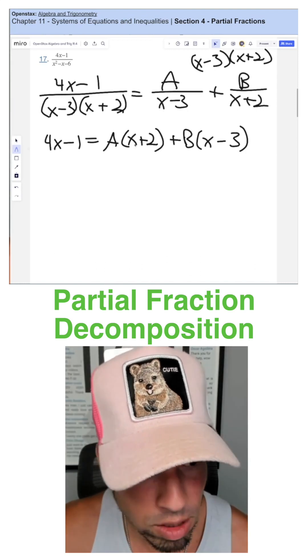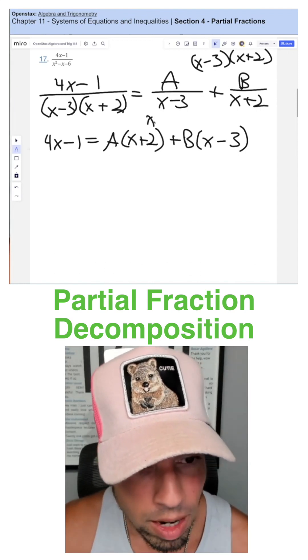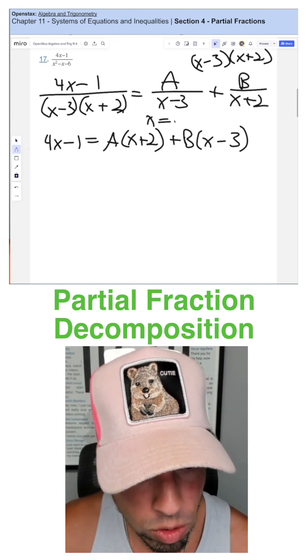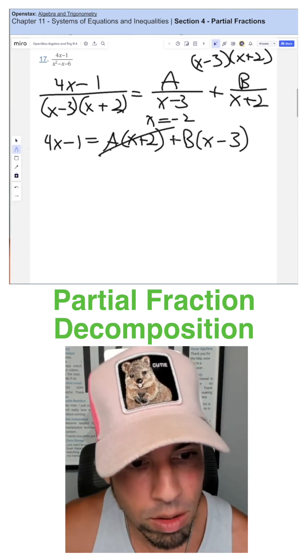Now I'm going to choose specific values of x that are going to find me A and B. And I'm going to choose smart values. I'm going to choose negative two first. Why? Because it's going to zero out this.